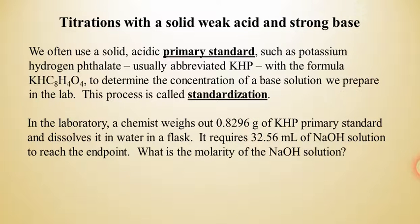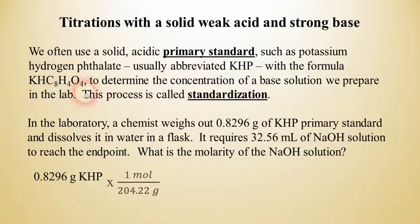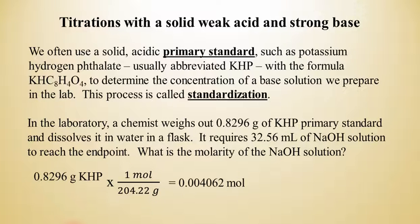We can solve this problem very easily. We start with the mass of the KHP and convert that to moles — in any stoichiometry process, step one is always convert to moles. Using the formula KHC8H4O4, we find that its molar mass is 204.22 grams per mole. Dividing, we find that we have 4.062 × 10⁻³ moles, or 0.004062 moles.